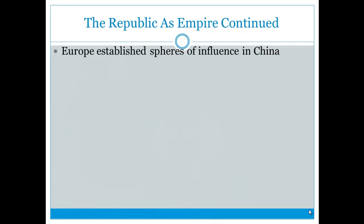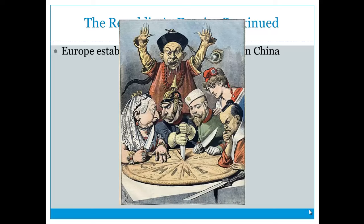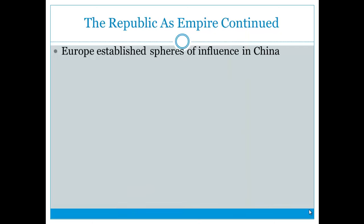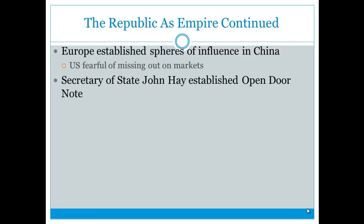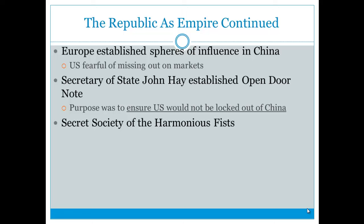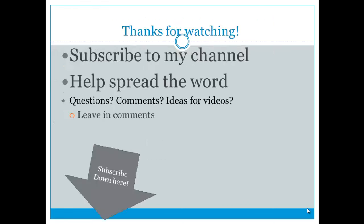Moving to China: Europe established spheres of influence, essentially carving up China. The U.S. feared missing out on valuable markets, so Secretary of State John Hay established the Open Door Policy to ensure the U.S. could trade in China even without a sphere of influence. As a result of these spheres of influence, a Chinese secret society called the Harmonious Fists — also known as the Boxers — chanted 'death to foreign devils' in the Boxer Rebellion, which was eventually broken up by multinational troops.